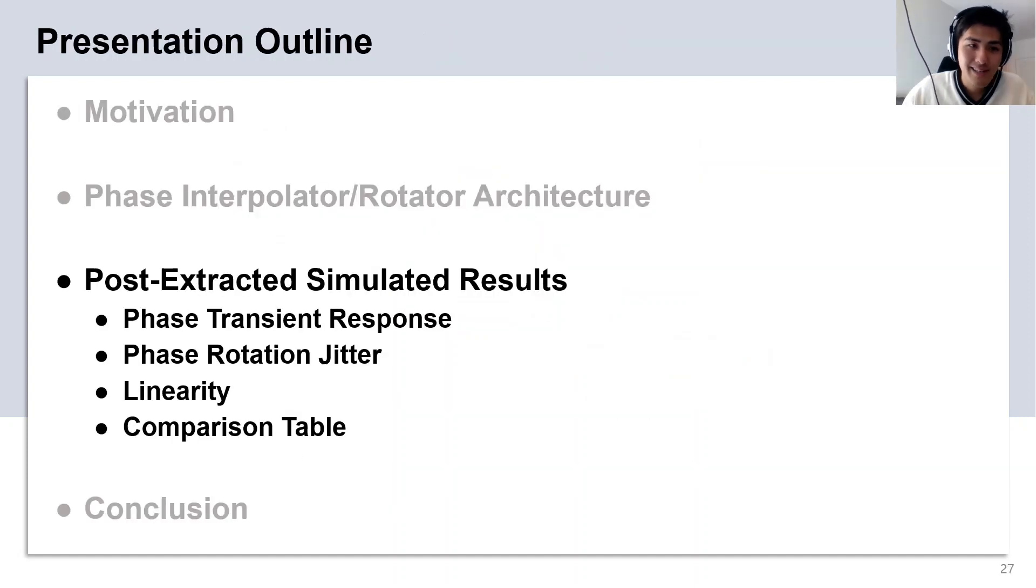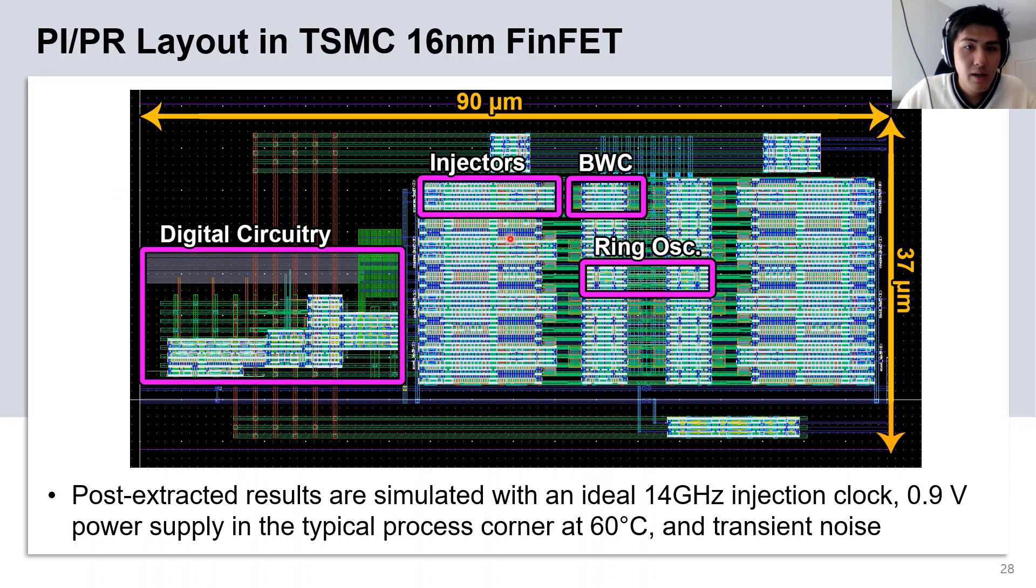Next, I want to present some of the post-extracted simulated results of the PI. Here, we show the layout of the proposed PI. Our results shown will be post-extracted simulation with transient noise enabled. At the typical process corner at 60 degrees Celsius temperature, we inject a 14 GHz clock into the system at 0.9 V VDD, and the ring oscillator itself is tuned to be very close to 14 GHz.